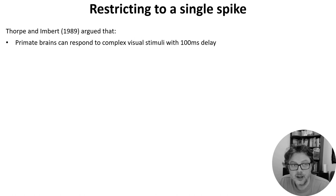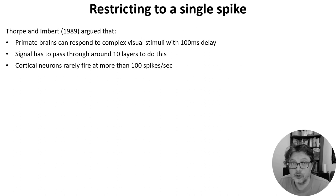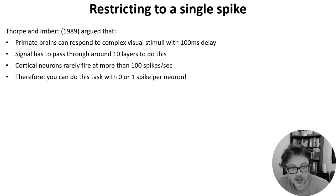They noted that primate brains are able to classify and respond to quite complicated visual stimuli like distinguishing between food and not food with as little as a hundred millisecond delay. From studying the anatomy they knew that to go from the visual system to the motor system that registered the response the signal would have to go through around 10 layers and since cortical neurons usually only fire at most around 100 spikes per second that means that in the 10 milliseconds that each layer has to process it likely only fires zero or one spikes. And so it must be possible to do quite complex tasks with each neuron firing only zero or one spikes.